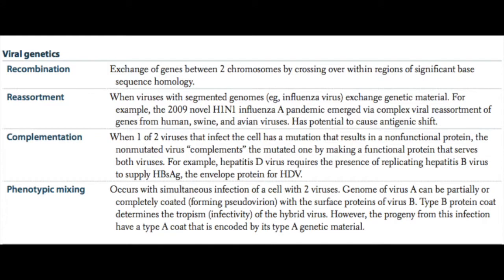Viruses, like bacteria, need to find ways to diversify through genetic recombination. The first mechanism is recombination, which is an exchange of genes between two chromosomes by crossing over within regions of significant base sequence homology. Reassortment is another type, which occurs when viruses with segmented genomes, like influenza virus, exchange some of these segments. These occur at a high rate and are known as high frequency recombination, and are the cause of worldwide influenza pandemics.